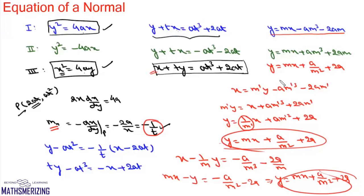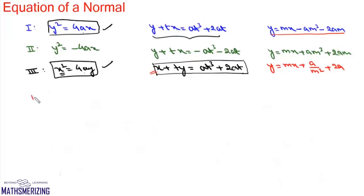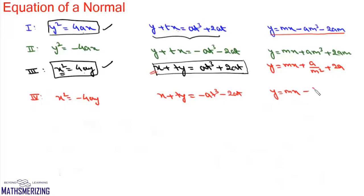So the equation of normal for the third form x² = 4ay is x + ty = at³ + 2at in terms of parameter t, and y = mx + a/m² + 2a in terms of slope of normal. For the fourth form x² = -4ay, the equation is x + ty = -at³ - 2at, and y = mx - a/m² - 2a. This covers the equation of normal for all four standard forms of a parabola.